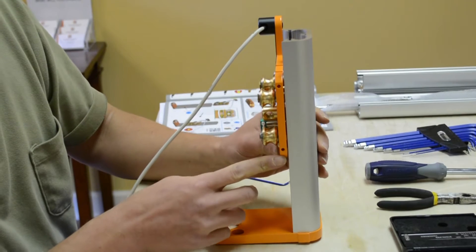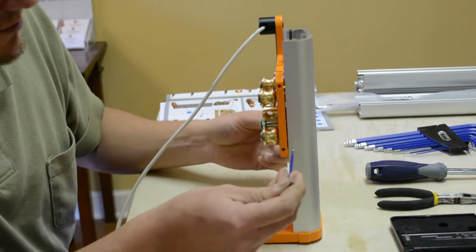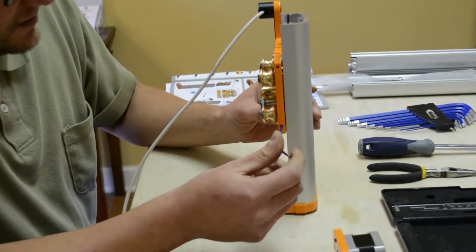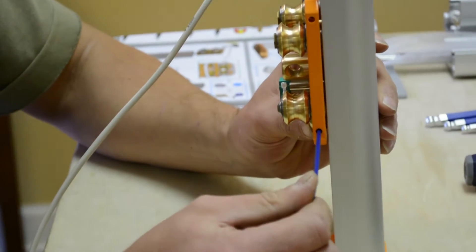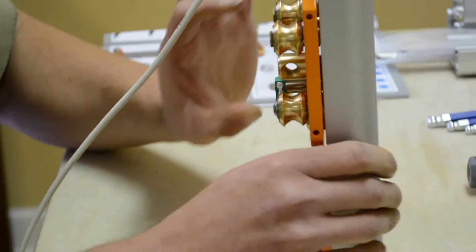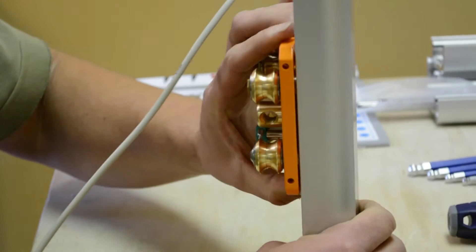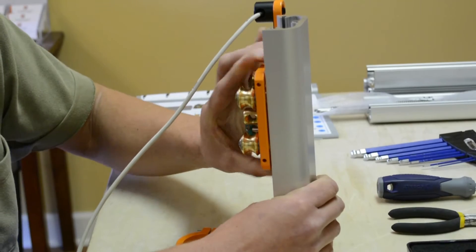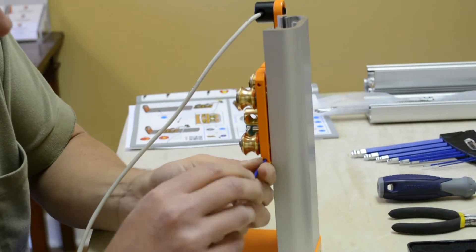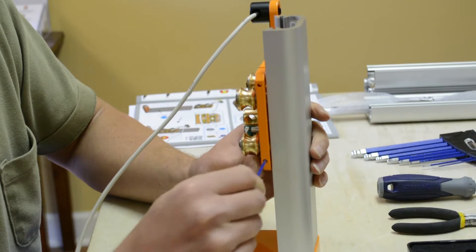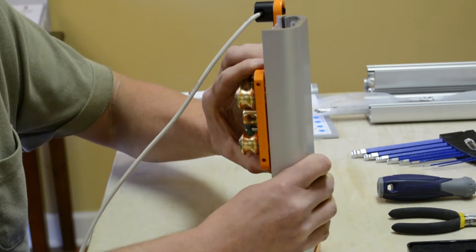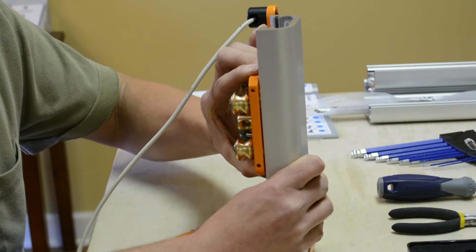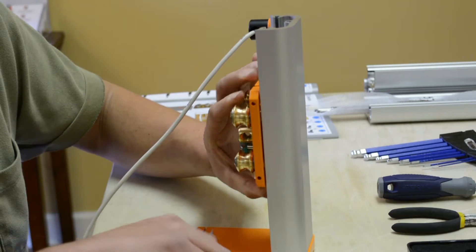So now I'm just going to go to this adjustment, 2.5mm Allen. I'm just going to slowly adjust it and just wiggle this until the free play is removed. Just small adjustments at a time, just a little bit more.